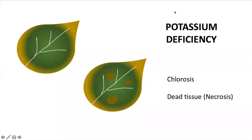The symptoms of potassium deficiency include a yellowish color on leaves, mostly at the border of the leaf. You can also find dead tissue at the margin of the leaf, or spots of dead tissue across the leaf surface.